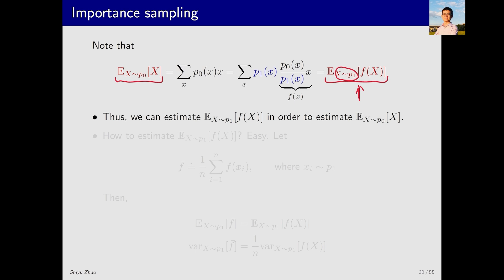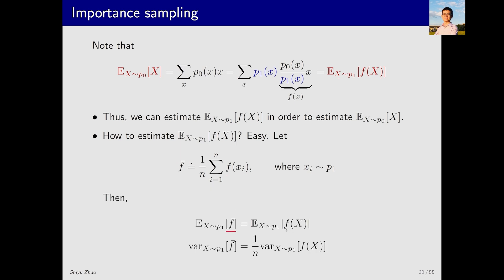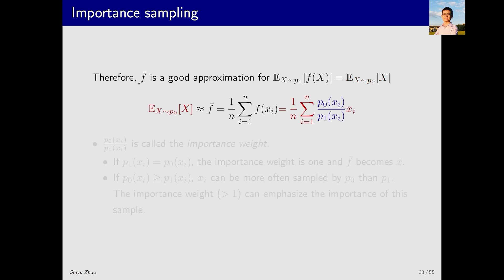Since the samples are generated according to p1, we can use these samples to approximate the expectation of f(x). This is the core idea behind importance sampling. To compute the right-hand side: since our samples are generated according to p1, we calculate f(x_i) for each sample x_i, sum them up, and take the average — denoted f-bar. The expectation of f-bar equals the expectation of f(x), and its variance equals the variance of f(x) divided by n, by the law of large numbers.